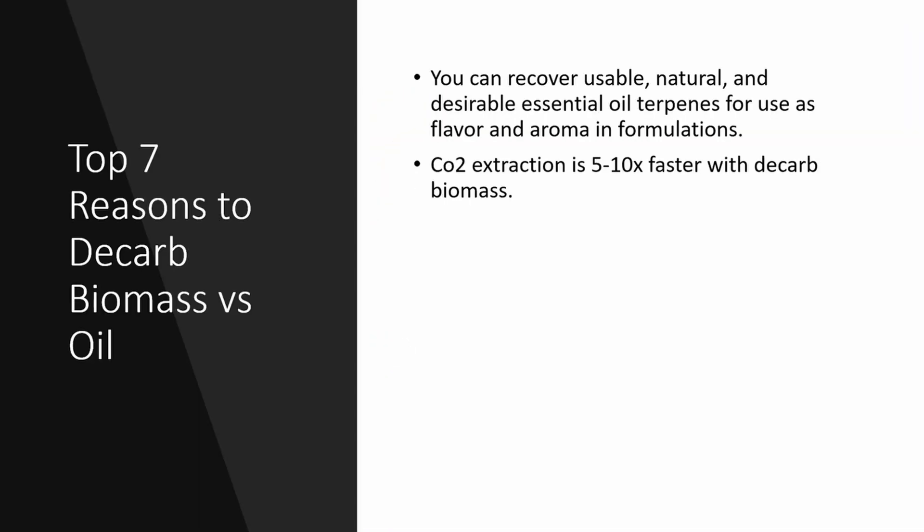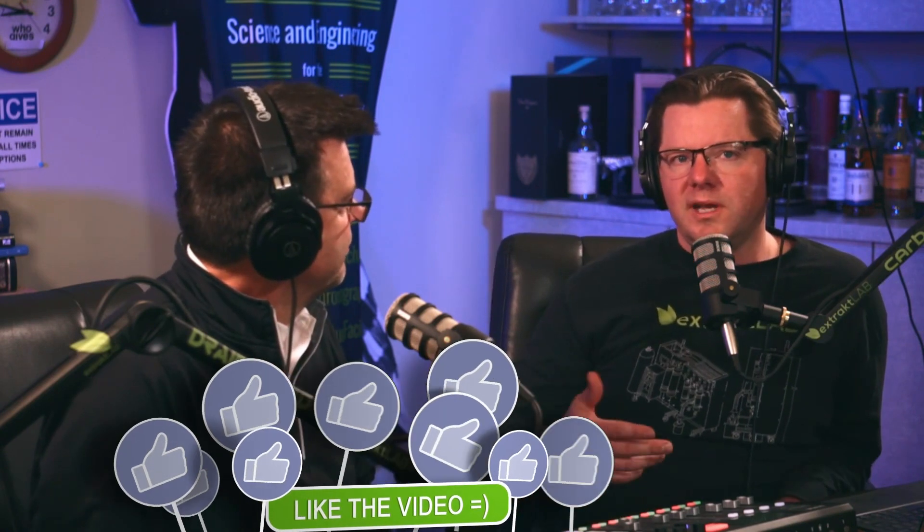Number six: CO2 extraction is five to ten times faster with decarbed biomass, because the neutral molecule — the decarbed neutral molecule — is much more soluble in CO2. CO2 is a non-polar solvent, and the acid form doesn't like to get into a non-polar solvent. We've been doing co-solvent since 2014 on our equipment. The very first piece of equipment we made and commissioned, we had it running solvent all the time.